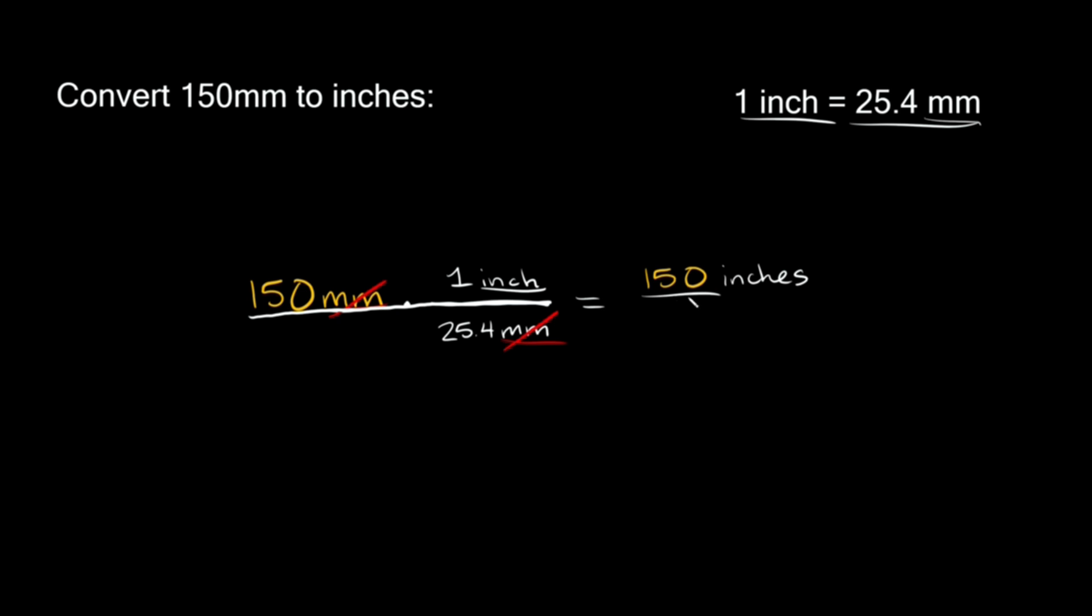And then that's going to go over whatever we have in the bottom, which is 25.4. Now 150 divided by 25.4 is equal to approximately 5.9.